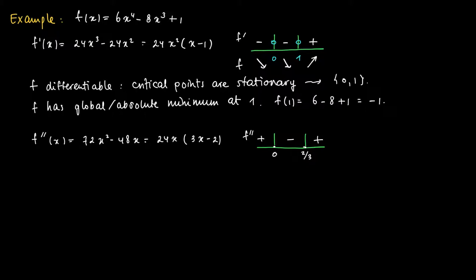The sign change is as follows: on the left hand side of 0 we get a positive second order derivative, in the middle between 0 and 2 over 3 we get a minus sign, and on the right hand side we get a positive sign. So we have two sign changes, one in 0 and one in 2 over 3. So we have two inflection points.